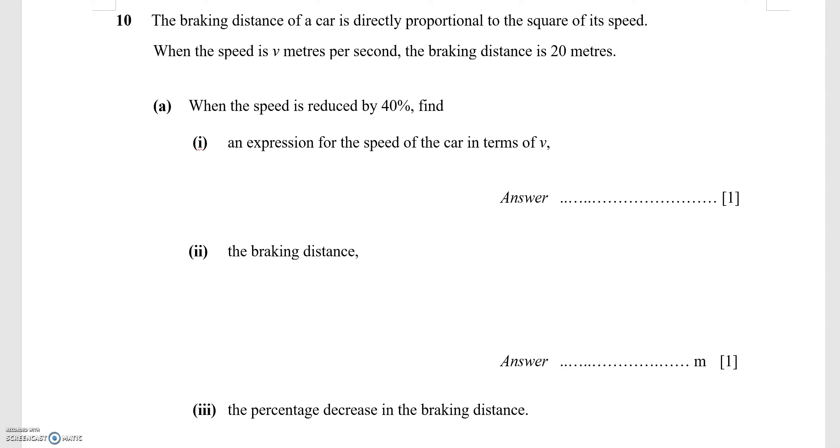Part A: when the speed is reduced by 40%, find an expression for the speed of the car in terms of v. If the initial speed is v meters per second and the speed has been reduced by 40%,